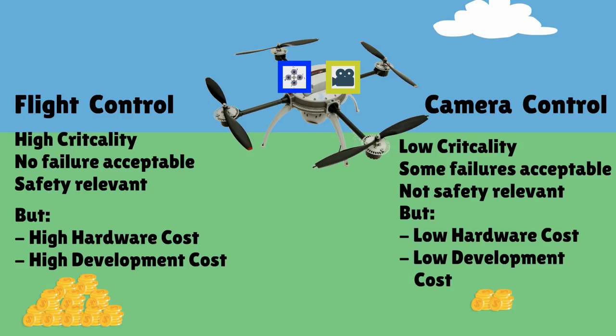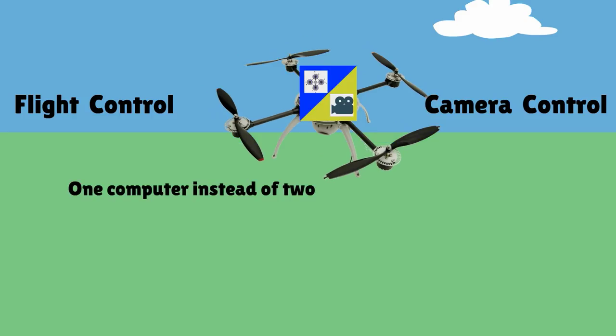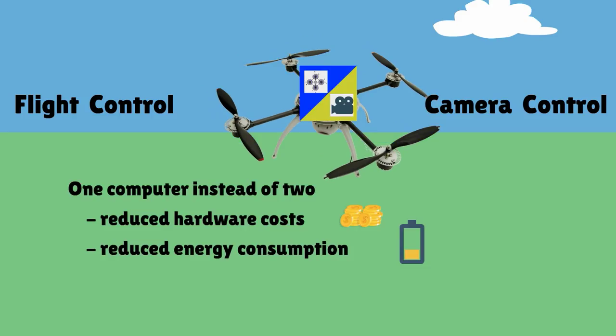Having the two systems both in one quadcopter is possible because they are strictly separated and can operate in isolation. We want to reduce this separation and integrate both systems into one device. With this, we are able to use one modern and more powerful computer instead of two. This allows reduced hardware cost, energy consumption and weight.